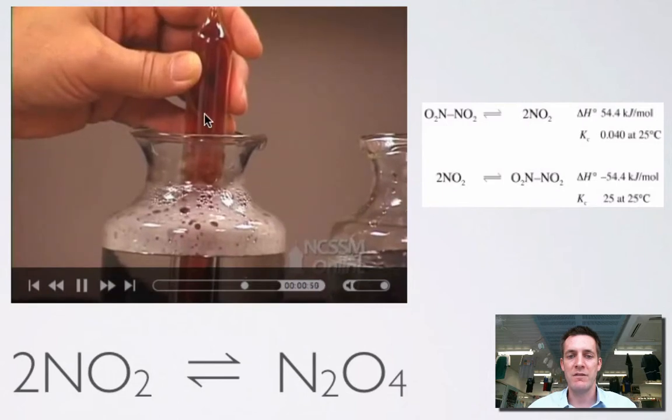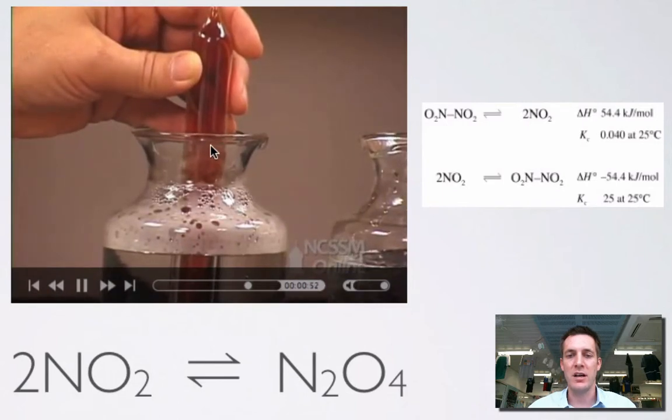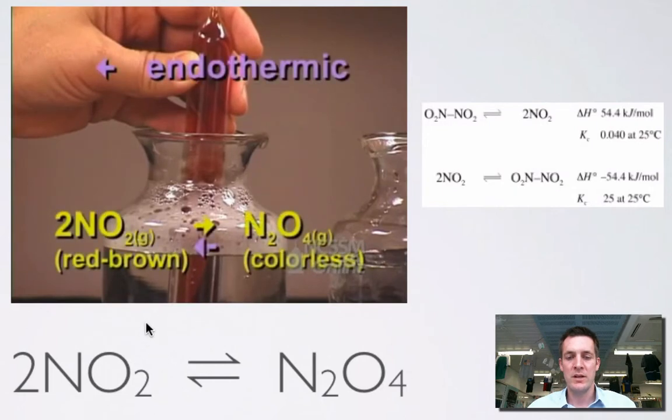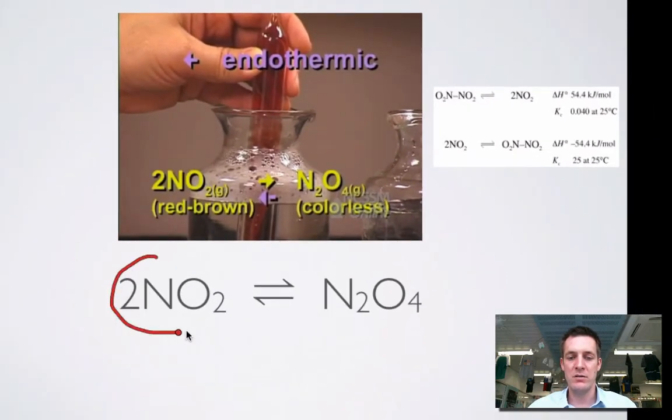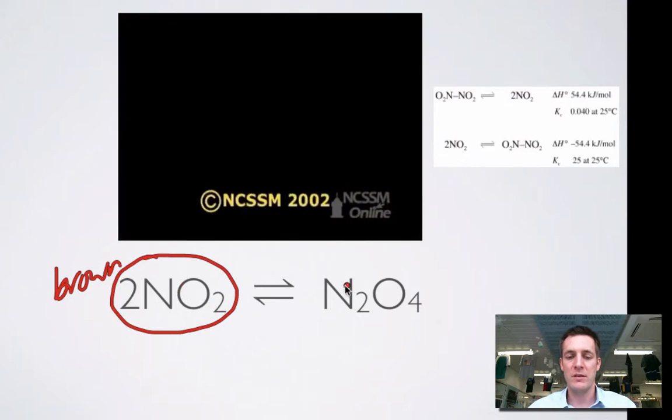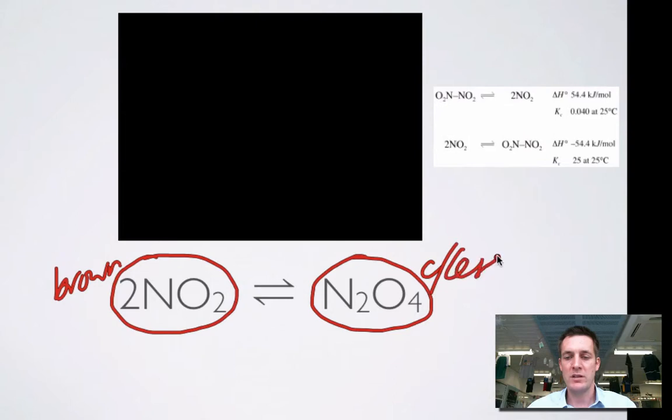Again, we're not going too much into the explanations here, we're just going to see what happens and explain it later. Now we're going into hot water and we should be able to see that the reverse color change happens. In fact, the system is getting darker. So to summarize: we've got the brown gas, the brown gas, and we go here when it gets hot. Here's the colorless side, and we went to the colorless side when things got cold.